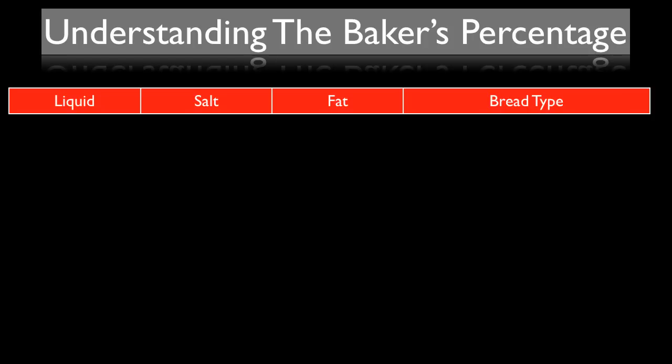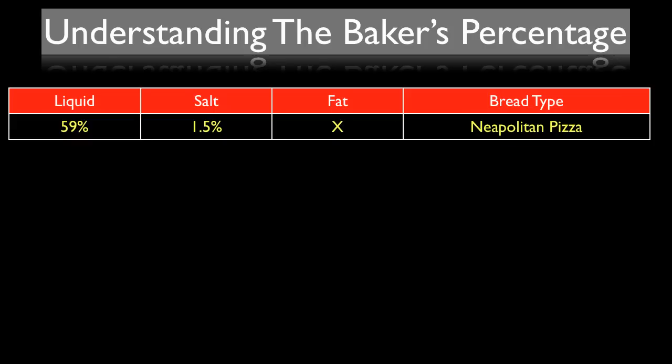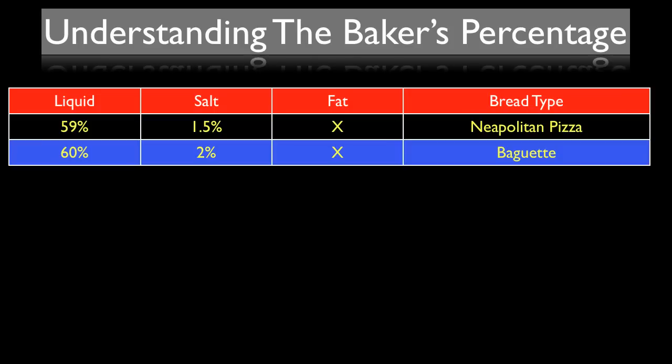Let's list some common bread dough ratios. For a Neapolitan style pizza dough that I bake in my wood fire oven, I use a 59% hydration rate, 1.5% salt, no fat, and a special type of flour called double zero pizza flour, which hydrates differently. This ratio of 59% hydration and 1.5% salt gives me my Neapolitan style pizza dough. If I raise the hydration by one percent and the salt by half a percent, that gives me a basic baguette dough ratio.